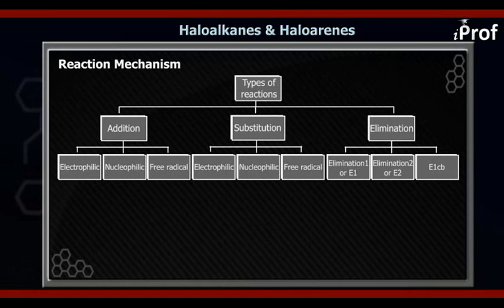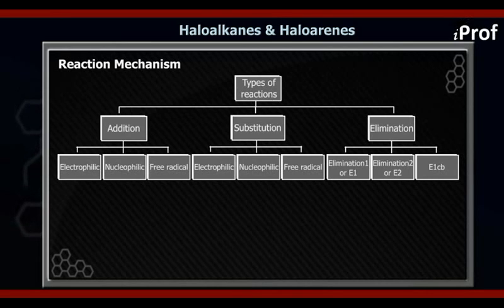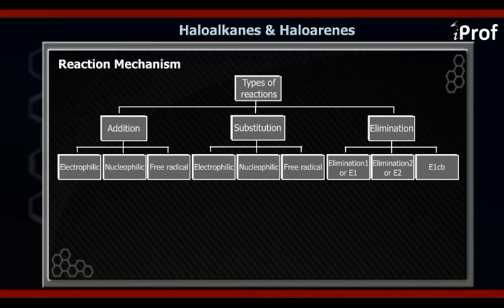Overall in organic chemistry, we can see that there are 10 mechanisms on which the whole of organic chemistry can be defined. The objective of reaction mechanism is to understand how reactants are converted into products — in other words, what series of steps a reactant undergoes to form the product.